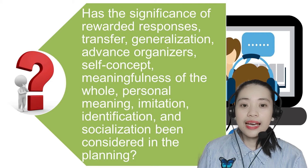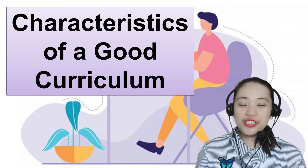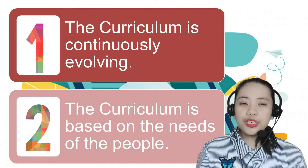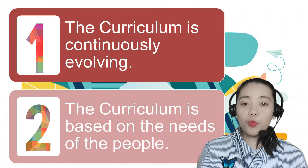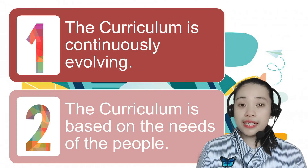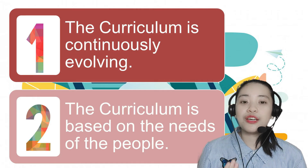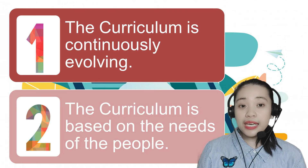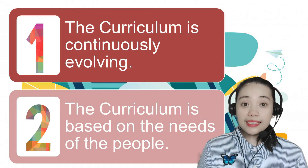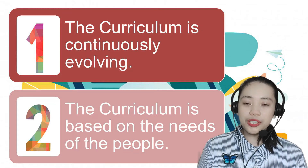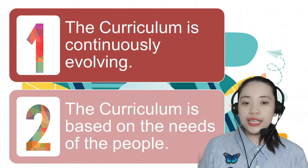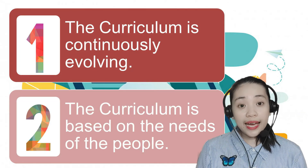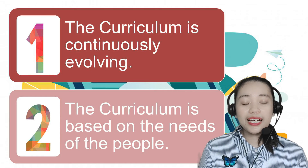Now let's move on to the characteristics of a good curriculum. First, the curriculum is continuously evolving — it evolved from one period to another to the present. For curriculum to be effective, it must have continuous monitoring and evaluation. Curriculum must adapt its educational activities and services to meet the needs of a modern and dynamic community. Second, the curriculum is based on the needs of the people. A good curriculum reflects the needs of the individual and the society as a whole, and is in proper shape to meet the challenges of the times and make education more responsive to the clientele it serves.